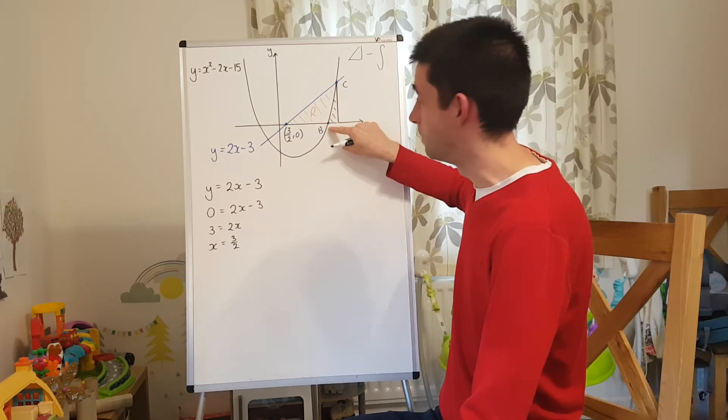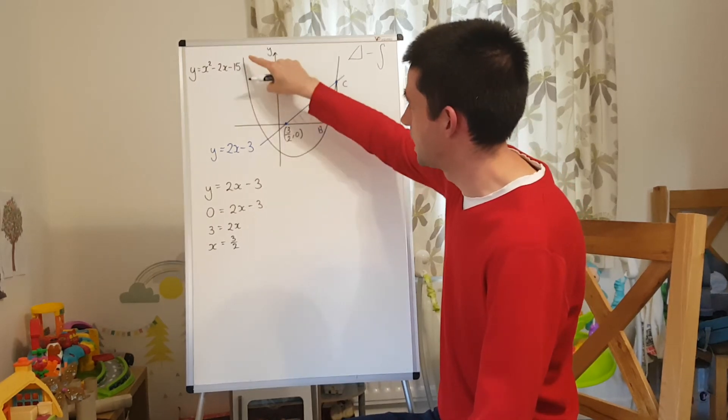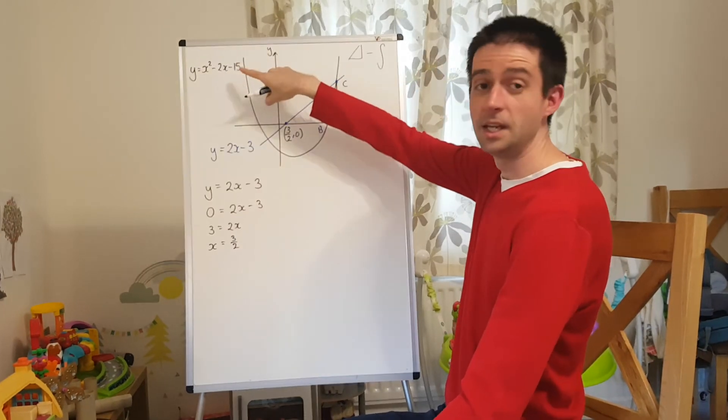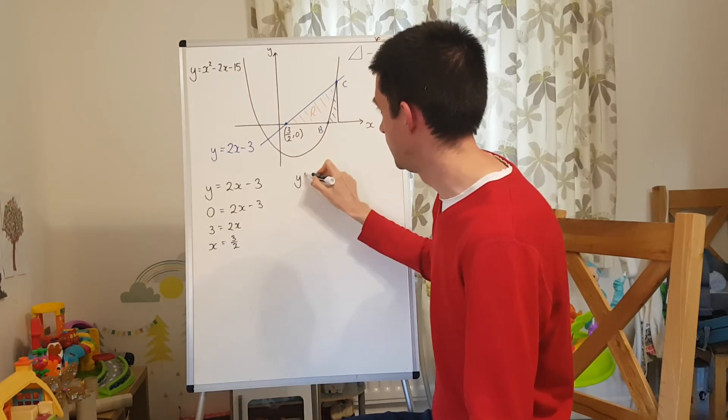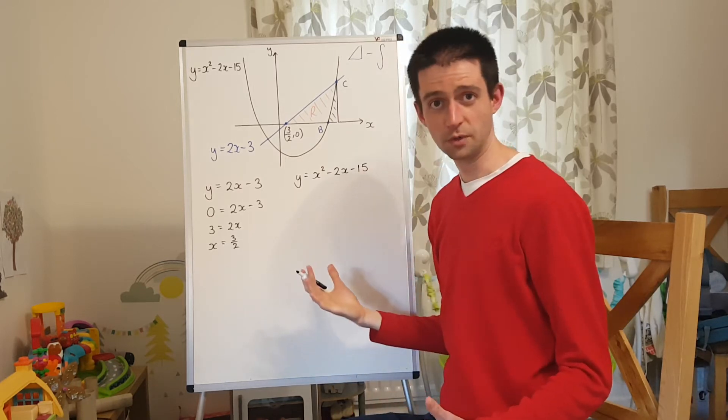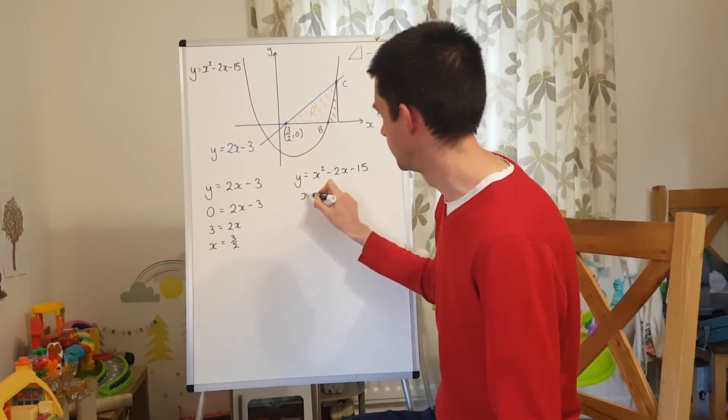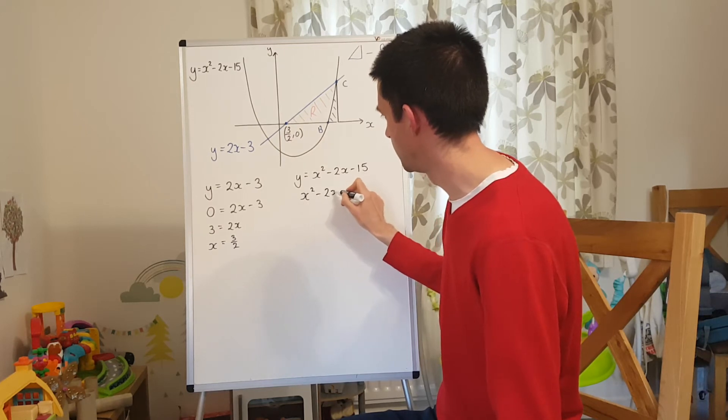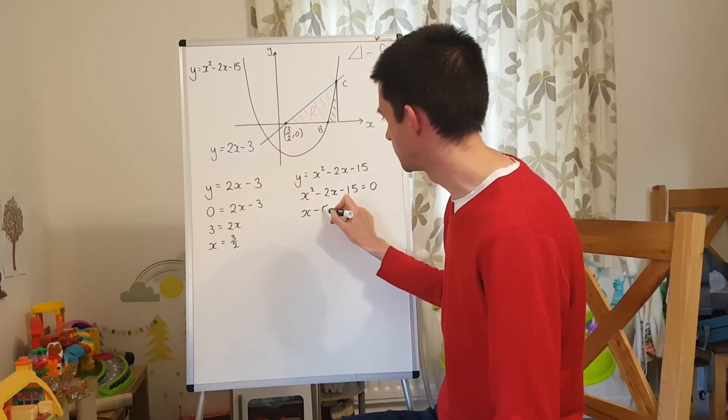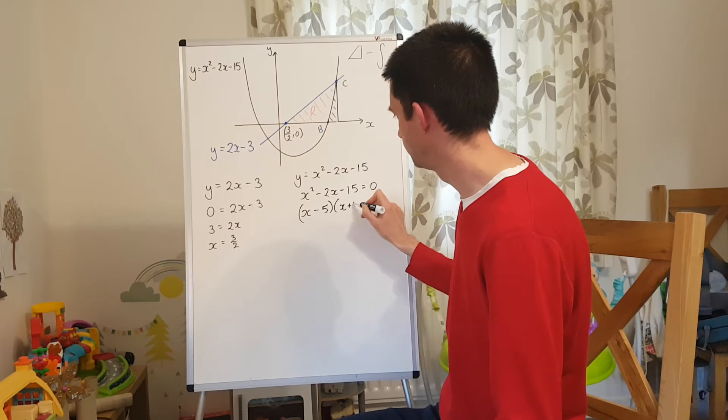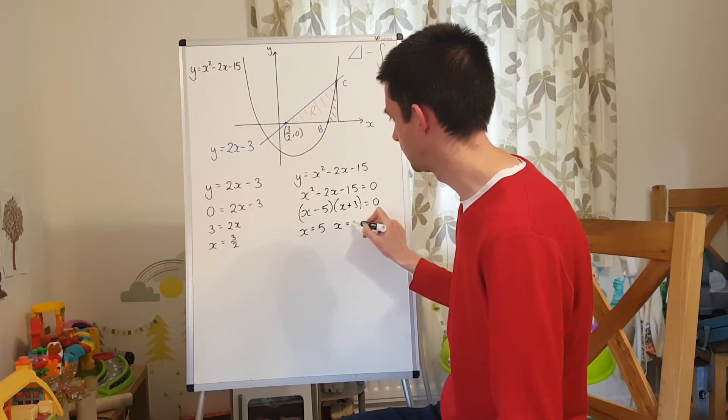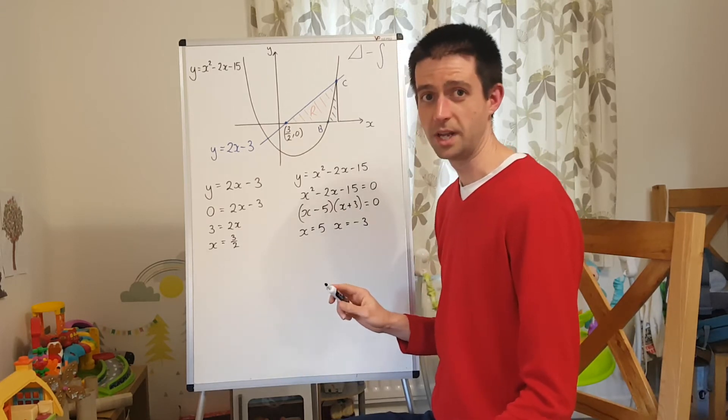I'm also going to need this point here, point B. That is the root, the point of intersection with the x-axis of the quadratic curve here. So y equals x squared minus 2x minus 15. How do you find the roots of a quadratic? You make y equals 0. So x squared minus 2x minus 15 equals 0. Factorises to x minus 5, x plus 3. Which means my two solutions, my two roots of that quadratic are x equals 5 and x equals negative 3.